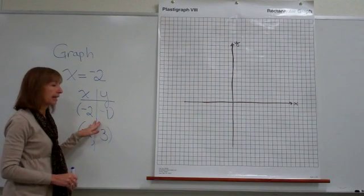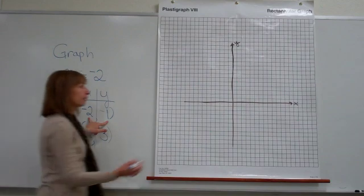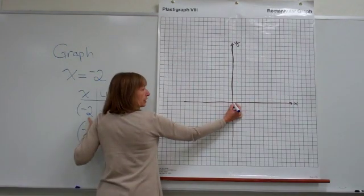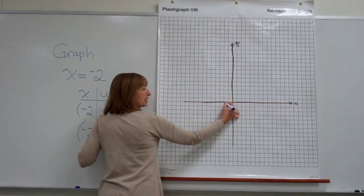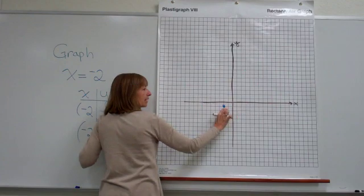So next, let's graph these ordered pairs. For the ordered pair negative 2, negative 1, we start at the origin. Our first coordinate is negative 2, so we go left 2, and our second coordinate is negative 1, so we go down 1, and we plot this point.